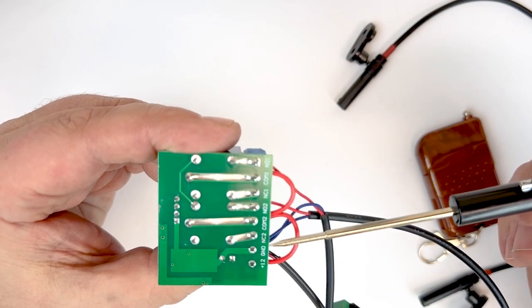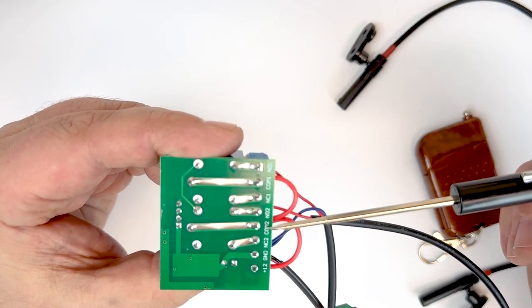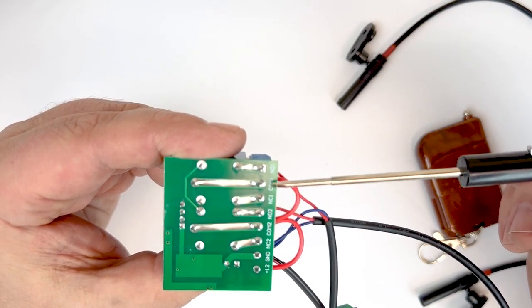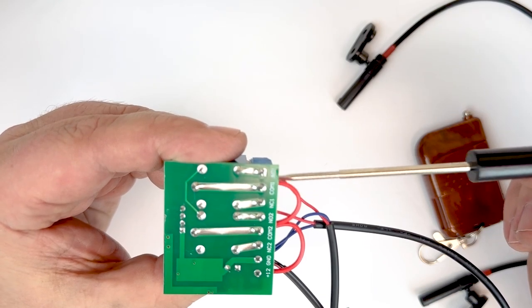So these are for your two relays. This is relay 2, normally closed, common, and normally open. And this is relay 1, normally closed, common, and normally open.